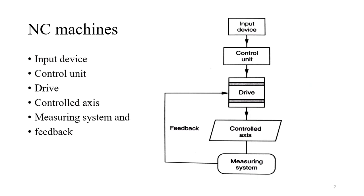This is actually the pathway of the NC machine. First of all, we have the input device — the device in which you insert the program or data, such as magnetic tape, punched tape, or punched cards. Then there is the control unit, which reads the input data and gives instructions to the drive system.